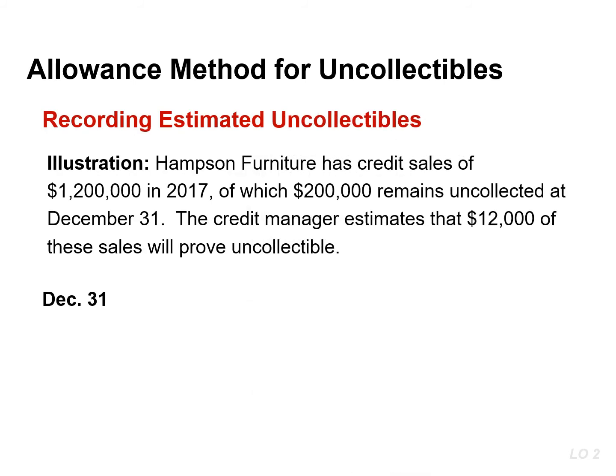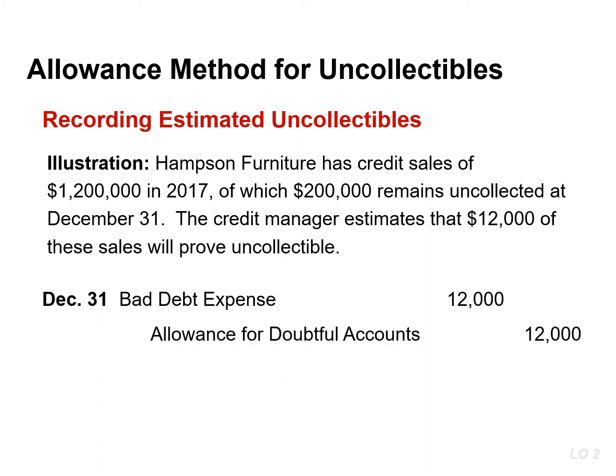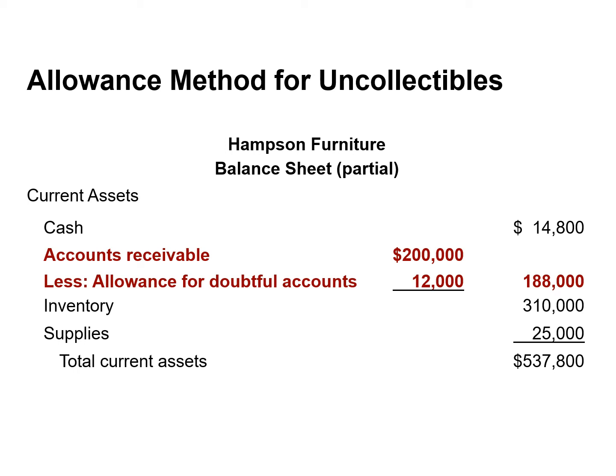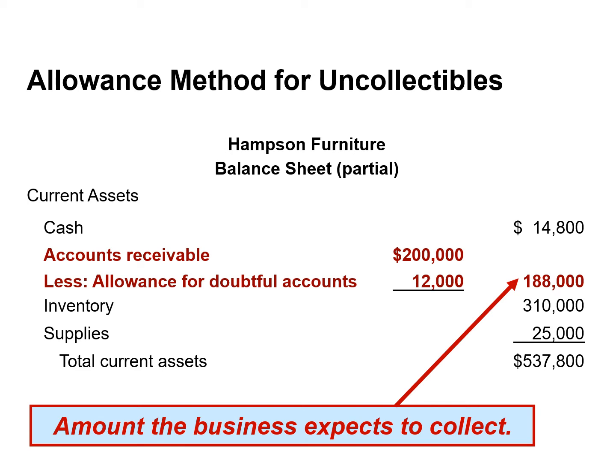To illustrate the allowance method, let's assume that this furniture company has credit sales of $1.2 million, of which $200,000 remain uncollected at the end of the year. The credit manager estimates that $12,000 of these sales will prove uncollectible. The adjusting entry will debit bad debt expense and credit allowance for doubtful accounts in the amount of $12,000. Allowance for doubtful accounts is a contra account to accounts receivable, and the difference between these two accounts is the net realizable value, which is the amount of cash the business expects to collect.